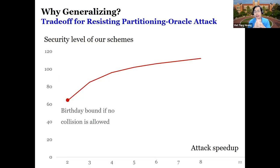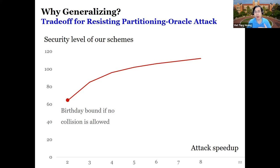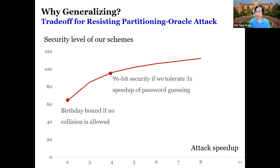It turns out the generalization gives us a trade-off for resisting the partitioning oracle attack. If there is no collision whatsoever, our schemes can only deliver the standard birthday bound in committing security. But if your applications can tolerate a little speed-up in password guessing, then we can deliver much better security — say, 96-bit security.